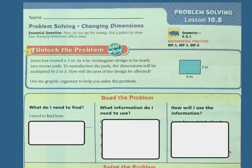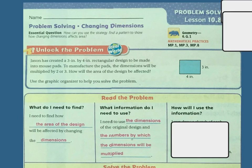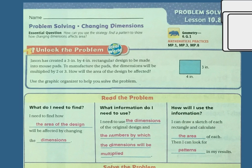So what do I need to find out? I need to find out how the area of the design will be affected by changing dimensions. What information do I need to use? Well, I need to use the dimensions. The numbers by which the dimensions will be multiplied, which was 2 or 3. How will the information be used? Well, I can draw a sketch of each rectangle and calculate the area of each, and then I can look for the patterns in my results.